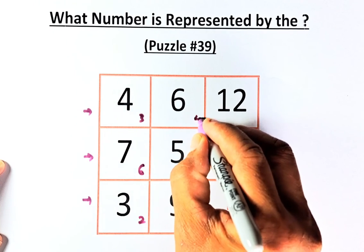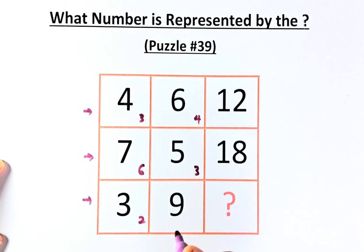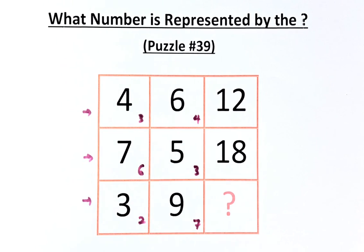6 minus 2 is going to be 4. 5 minus 2 is going to be 3. And 9 minus 2 is going to be 7. So what you're going to do, you're just going to multiply the two numbers.